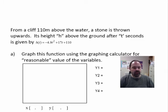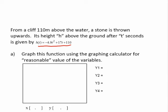Let's take a look at another example. This time one related to a practical situation. The problem says from a cliff 110 meters above the water, a stone is thrown upwards. And its height, H, measured in meters, above the ground after T seconds is given by this quadratic equation. Just before we graph this, let's just make sure we got a little bit of a grasp as to what's possibly happening here. Our dependent variable is H, measured in meters. Our independent variable is T, measured in seconds.